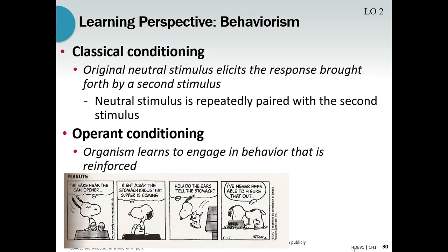Now, you guys probably already spoke about classical conditioning and operant conditioning in general, so I just want to talk briefly about both of them. In classical conditioning, a subject will learn to react to a neutral stimulus similarly to how they would react to an unconditioned stimulus. And in operant conditioning, we modify behavior through rewards and punishments.